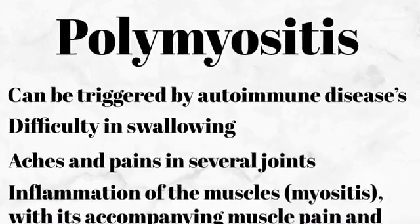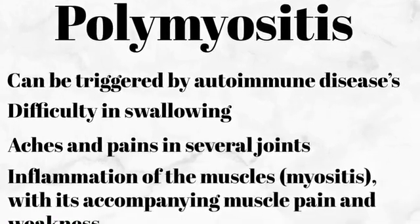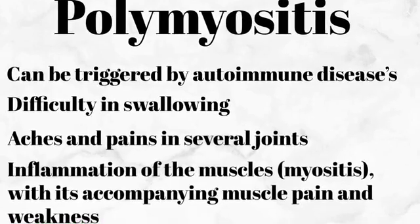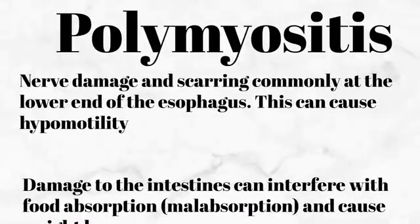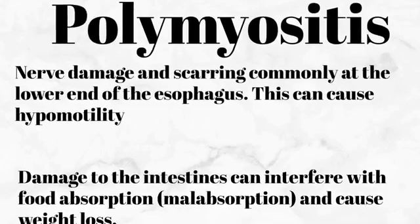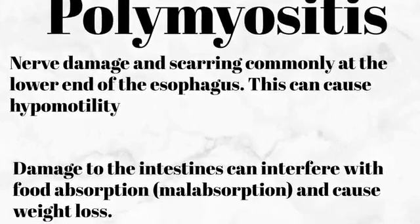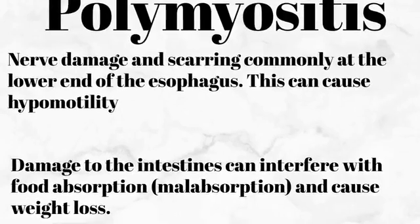The next is polymyositis, and there are quite a few symptoms I have experienced personally in this category. Symptoms of polymyositis include that it can be triggered by an autoimmune disease, difficulty swallowing, aches and pains in several joints, and inflammation of the muscles — myositis — with accompanying muscle pain and weakness. There can also be nerve damage and scarring commonly at the lower end of the esophagus, which can cause hypomotility. Damage to the intestines can interfere with food absorption, causing malabsorption, weight loss, and vitamin deficiencies.